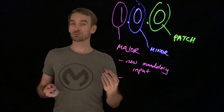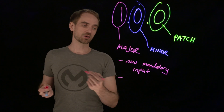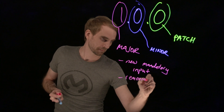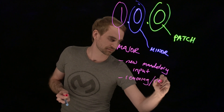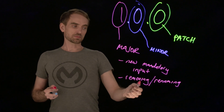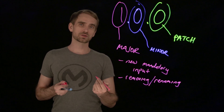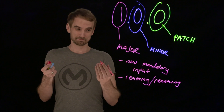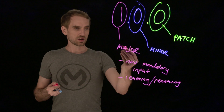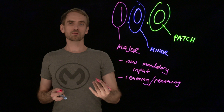Another major version trigger is if you remove functionality or rename something. Renames are the same as a remove and then an add of a new function. This could also apply to a field — if a client was expecting a certain field to come back and it gets removed, and they were reliant on it, they could have problems on the client side. That would require you to increment the major version, making it version 2 of your API.